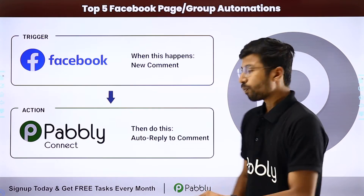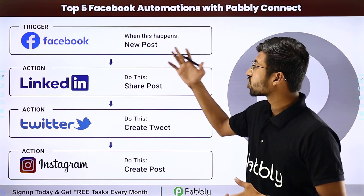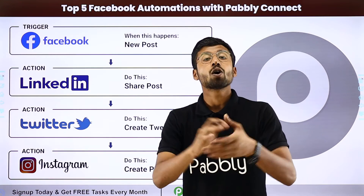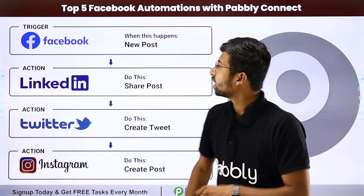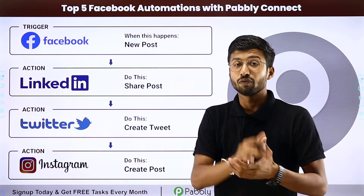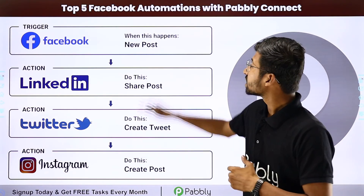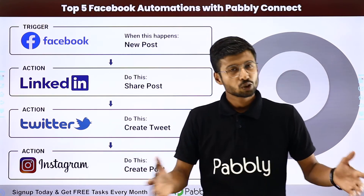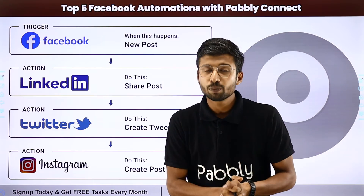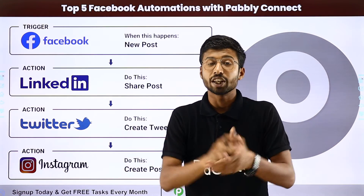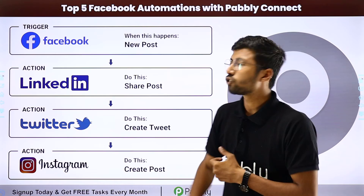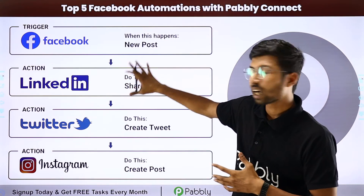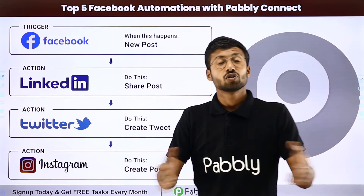Our last and most amazing automation is sharing Facebook page posts to multiple social media platforms. Using Pabbly Connect, whenever you share a new post on your Facebook page, the same post is automatically shared on multiple platforms like LinkedIn, Twitter, and Instagram. You don't have to manually post the same content on all different applications — just post once on Facebook and it gets shared to your LinkedIn, Twitter, and Instagram accounts automatically.